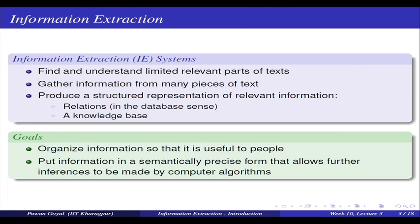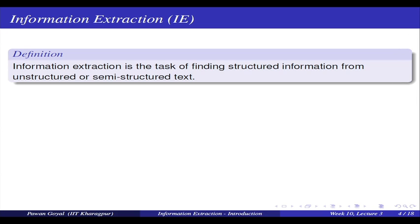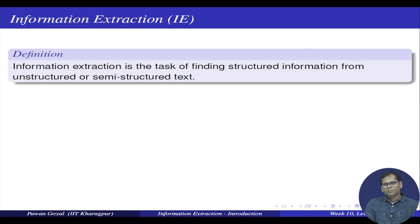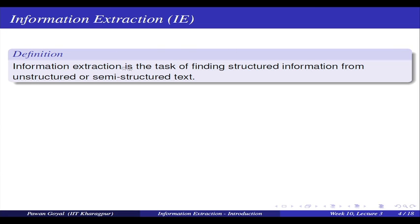Remember, this was one of the things we discussed in the introduction - that natural language text is not very precise. How do you convert the information to something precise that can be used for doing various tasks and inferences? That is what we are doing in the case of information extraction. So information extraction is the task of finding structured information from unstructured or semi-structured text. Your corpus can be completely unstructured - tweets, Quora questions and answers, web pages - or it can be somewhat semi-structured where you have section information, headlines, etcetera.